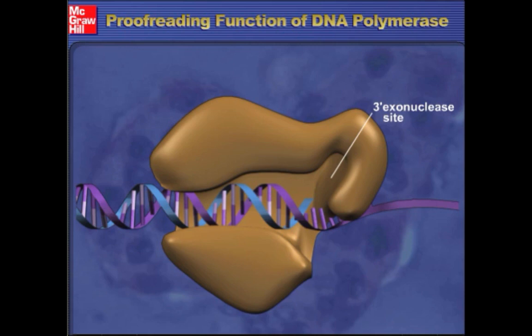Following removal in the 3' to 5' direction, DNA polymerase can then resume its synthesis activity in the 5' to 3' direction. The proofreading function reduces the overall error rate to as low as about 1 in 100 million for DNA polymerase III.